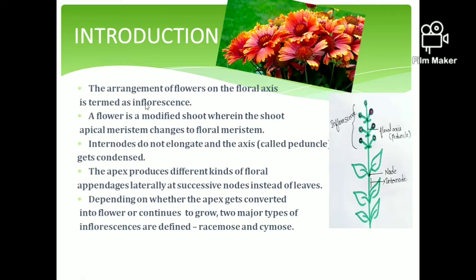The floral axis bears the flowers in an arrangement called inflorescence. Here in the figure, this is the floral axis, and this floral axis is called the peduncle. This peduncle bears the flowers in an arrangement which is the inflorescence. The flower is a modified shoot wherein the shoot apical meristem changes to a floral meristem.